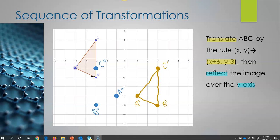Just like I did before, I'm simply going to draw my lines to connect the dots. And now I have finished my transformation, my sequence of transformations. So I went from my original ABC to the translation followed by the reflection.